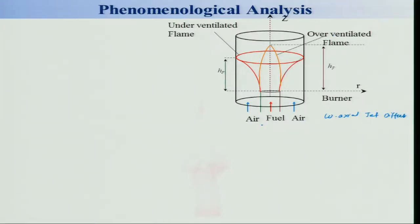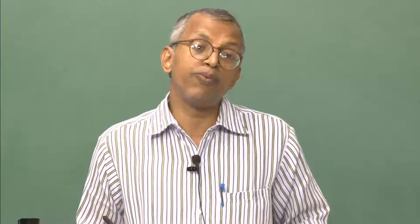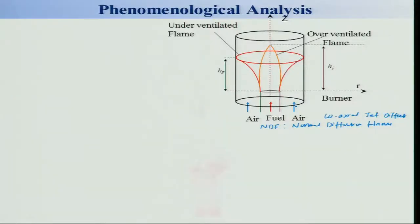We call this the normal diffusion flame (NDF). If I interchange the fuel stream with air and the air stream with fuel, I get another kind of flame known as an inverse diffusion flame — air in the central port and fuel in the annular port. This produces a different kind of flame; you can even get a blue flame in the case of hydrocarbons. But we will restrict our discussion to the normal diffusion flame.